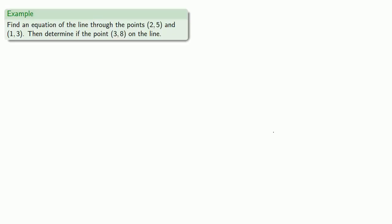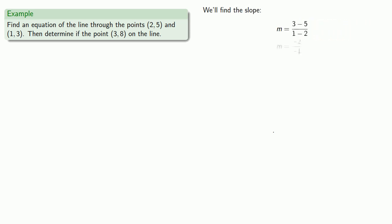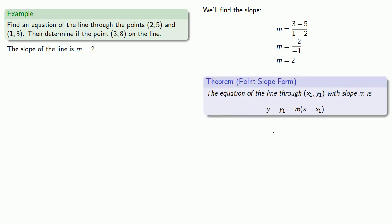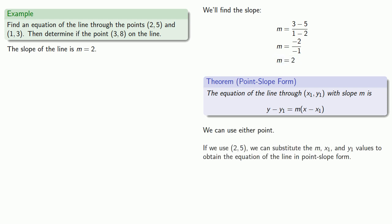Let's find the equation of the line through the points (2, 5) and (1, 3), and then determine if the point (3, 8) is on the line. First, we calculate the slope of the line, which works out to be 2. Now we can write the point-slope form. Using the point (2, 5), we substitute our m, x1, and y1 values to obtain the equation of the line.